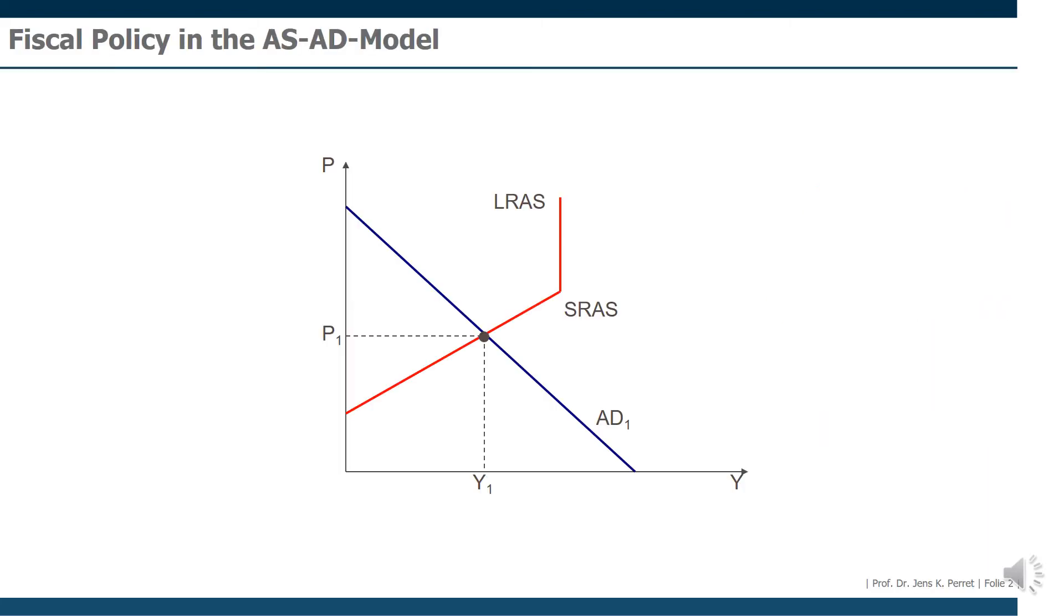Let's start with this simple AS-AD model. Here, our equilibrium, the point where AD and AS curve meet, is in the short-term part of the AS curve, so the SRAS curve. This area means our economy hasn't yet achieved its full production potential.